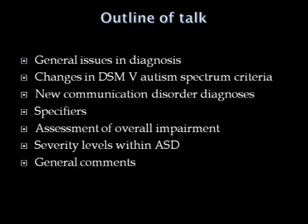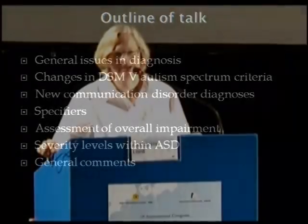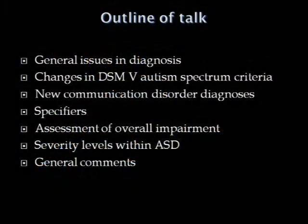To walk you through what I'm going to do: I'm going to talk about general issues in diagnosis, then talk about specific changes in the criteria for autism spectrum disorders, talk very briefly about a new communication disorder diagnosis, then talk about the idea of specifiers and the notion of assessing overall impairment — both of which hold true for all DSM-5 diagnoses, not just neurodevelopmental disorders — and then end with general comments if we have time.